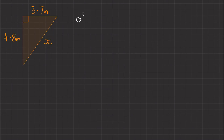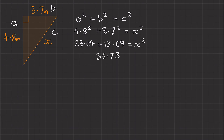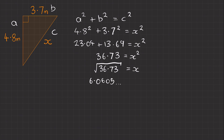For this question, a squared plus b squared equals c squared. Labelling a, b and c: we have 4.8 squared plus 3.7 squared equals x squared. That gives 23.04 plus 13.69 equals x squared. 36.73 equals x squared. Square rooting both sides: the square root of 36.73 equals x, which gives 6.0605 in the calculator. So our final answer is x equals 6.1 meters to one decimal place.